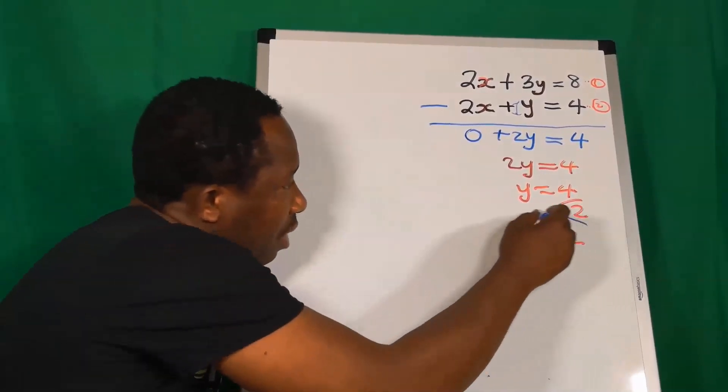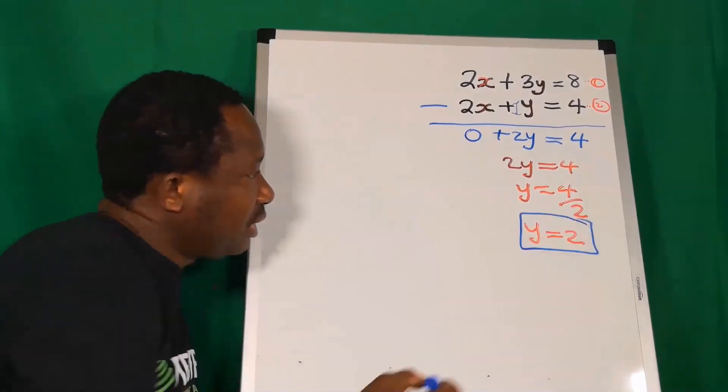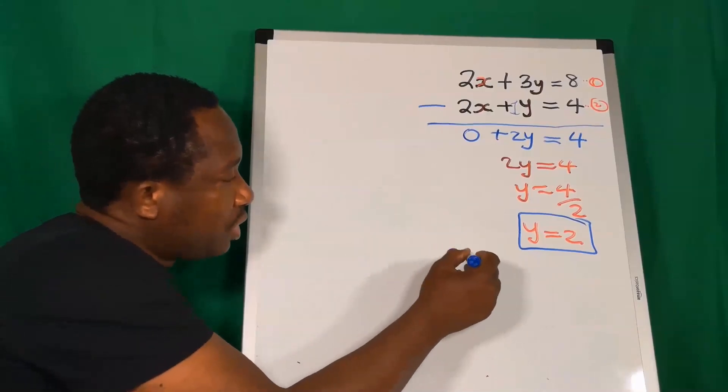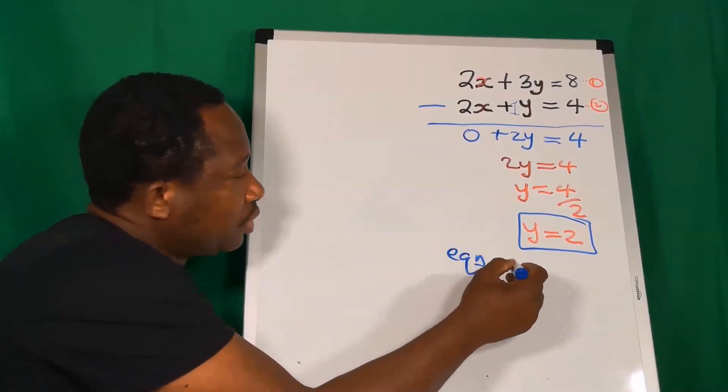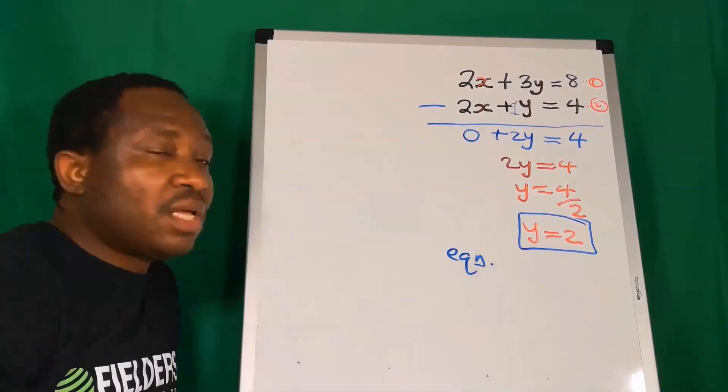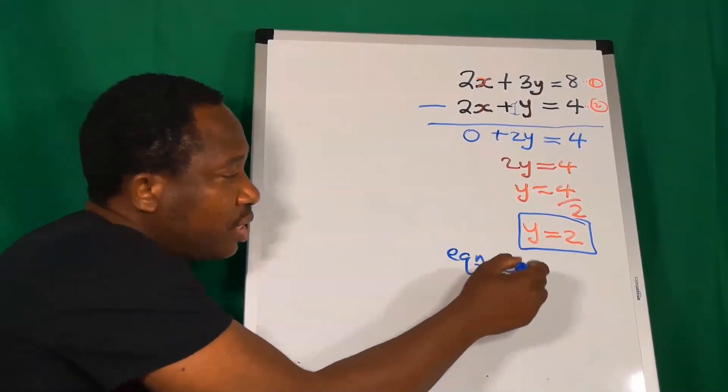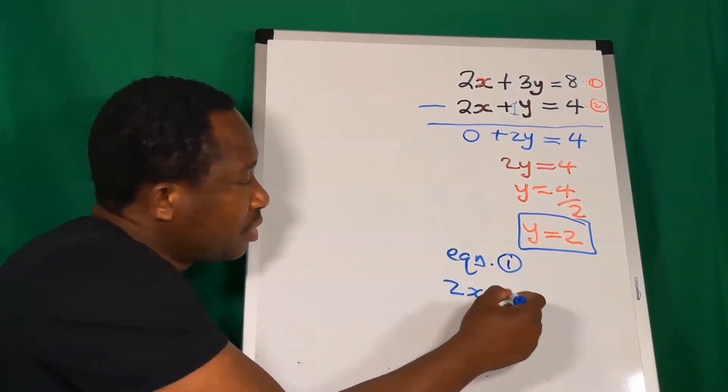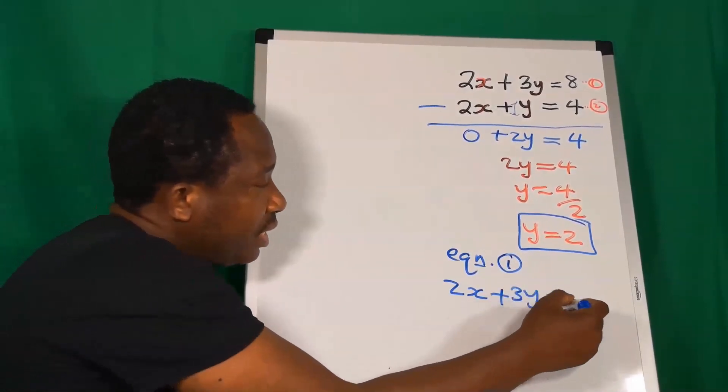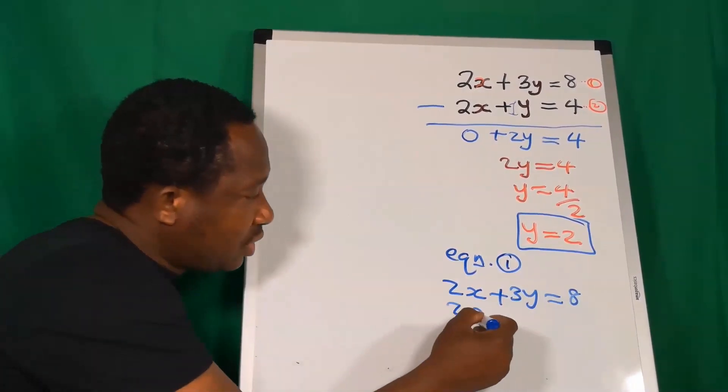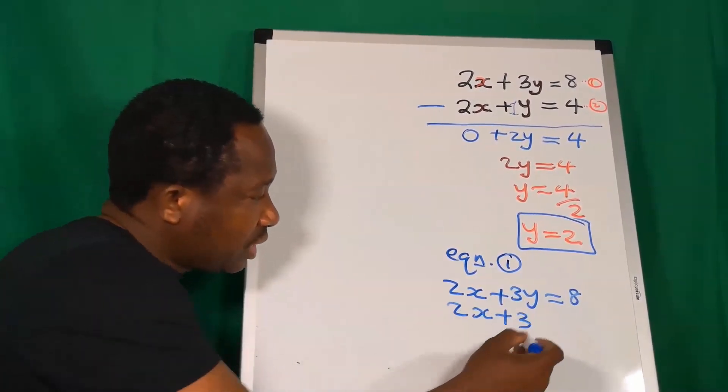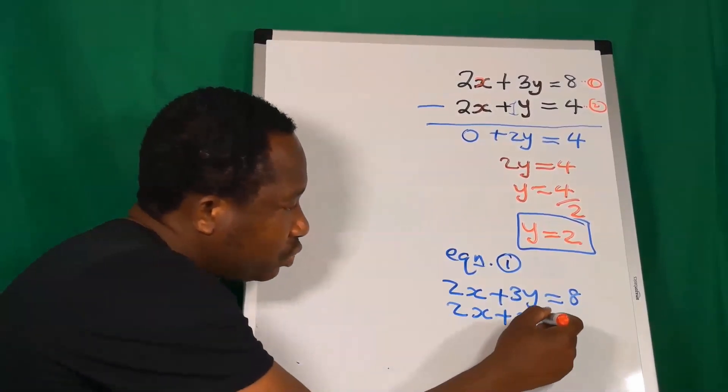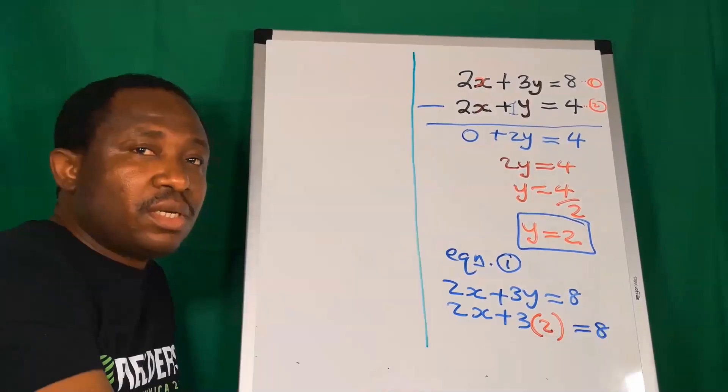You see, we have obtained that y is 2. Next, we are going to substitute y equal to 2 into equation 1 or 2. Here, I will substitute into equation 1. Equation 1, we have that 2x plus 3y is 8. We have y, so this is 2x plus 3. And instead of y, here, y is 2. And this is 8.